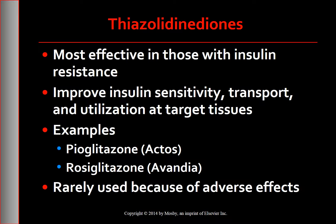Rosiglitazone is associated with adverse cardiovascular events, such as myocardial infarction, and can be obtained only through restricted access programs. Pioglitazone can worsen heart failure and is associated with an increased risk of bladder cancer.